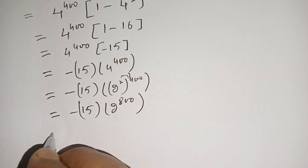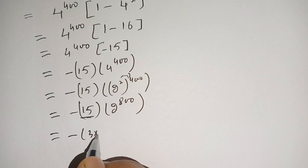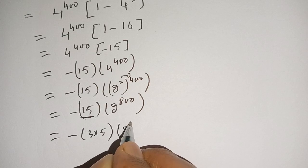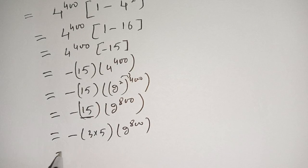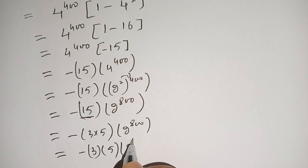Now we factorize this 15. It becomes minus 3 times 5, 3 times 5 becomes 15, and 2 power 800. So it is equal to minus 3 times 5 times 2 power 800.